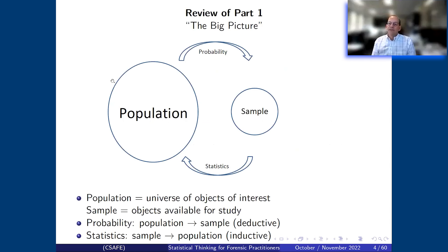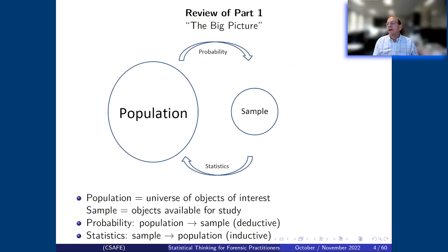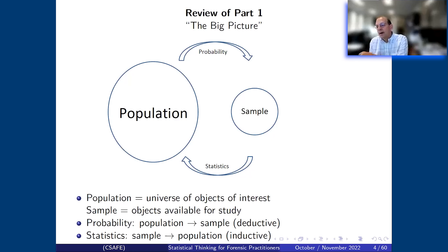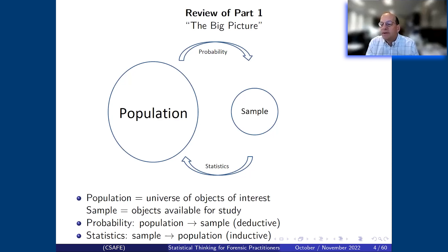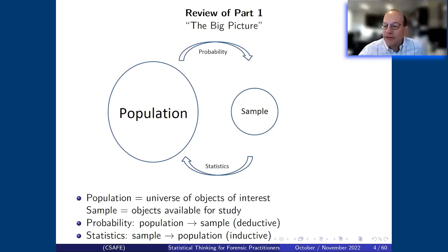A couple of slides of review. This is what I call the big picture for statistics. We think about the population as being all of the things we're interested in — all people in a medical study, all shoes in a footwear study. Then we talk about a sample, which is the set of objects we have data about. Probability tells us what happens when you know something about the population and want to say something about the sample. Statistics tells us what happens when you have a sample and want to draw conclusions about the population.